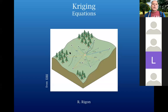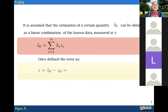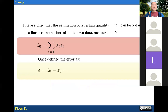Let's go to see the equations for Kriging. As in other methods, we assume that we have to calculate a quantity that we call hat Z0, which can be obtained as a linear combination of the known data measured at points i. So hat Z0 is equal to the summation over all points, from one to n, of lambda_i times Z_i, where lambda_i is a weight.